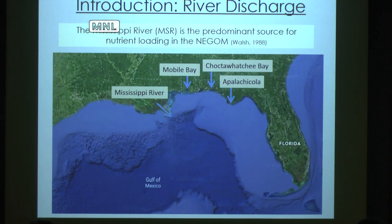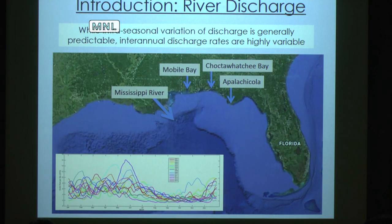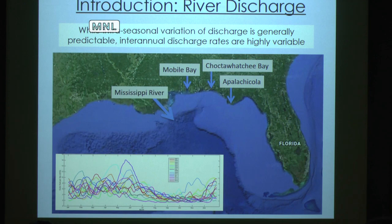Our study region has a lot of river inputs, but by far the largest is the Mississippi River. It has the greatest volume, the greatest input of nutrients, and the other rivers mimic its discharge patterns. The seasonal variation within a year is pretty predictable — discharge follows snowmelt in the U.S. interior, so the height of discharge is spring with lowest discharge summer through fall. However, inter-annual variability is super high, as you can see in the bottom graph — all these lines are different years and they change quite a lot.